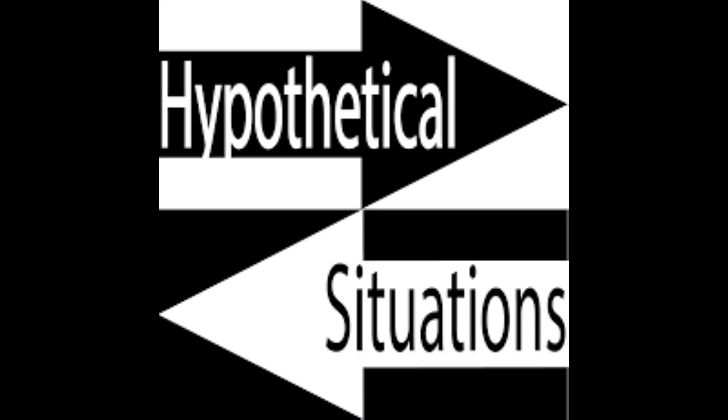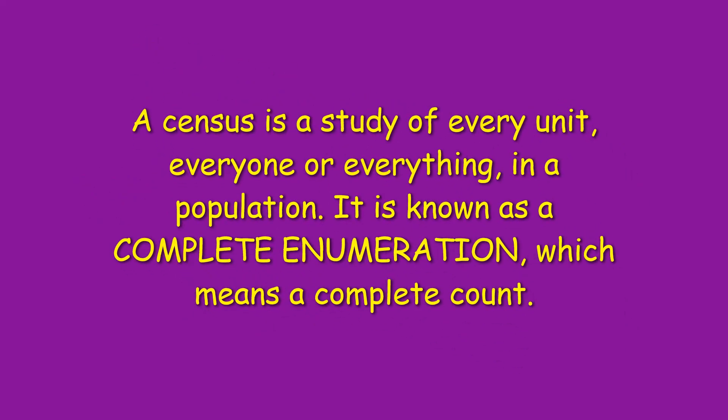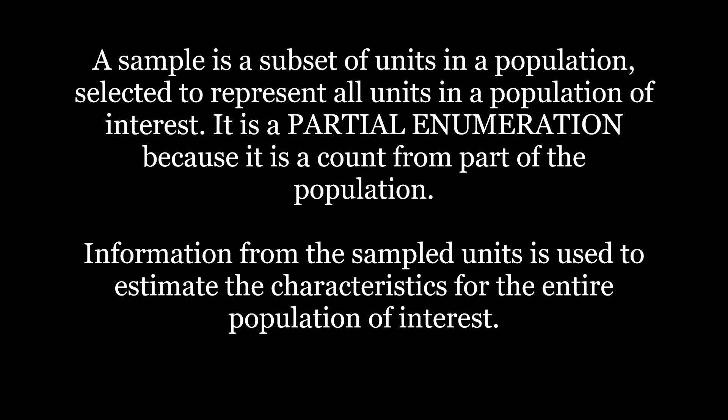Sampling or census — which do we go for? Census is a study of every unit, everyone or everything in a population. It is known as complete enumeration — completely counting every individual. A sample, on the other hand, is a subset of units in a population. It is a partial enumeration, meaning you don't have to count every individual entity. Information from a sample can be generalized for the entire population.